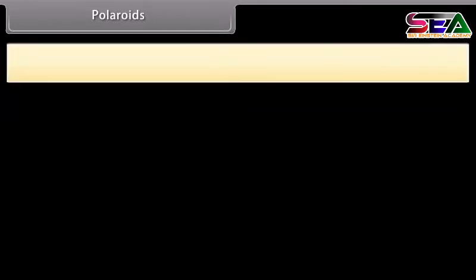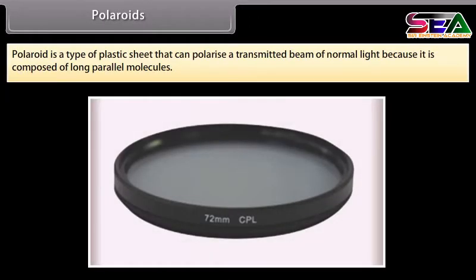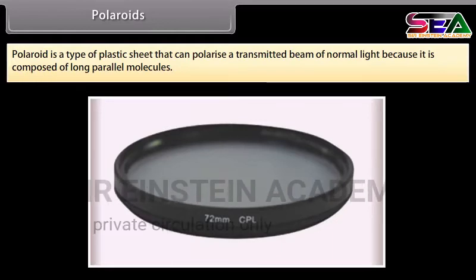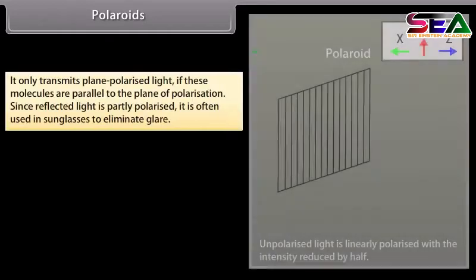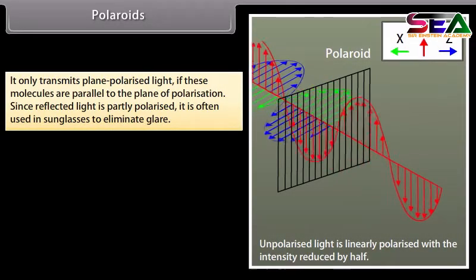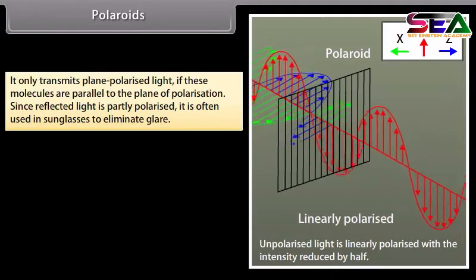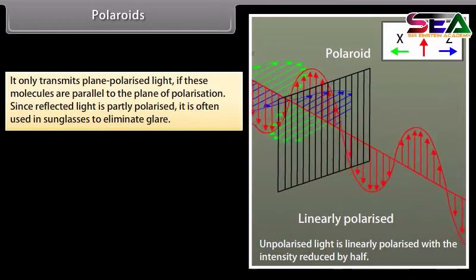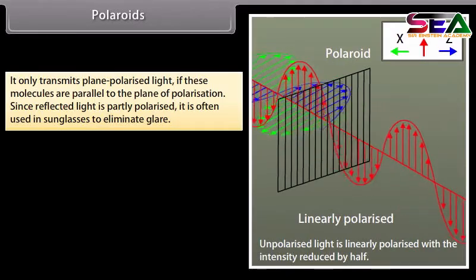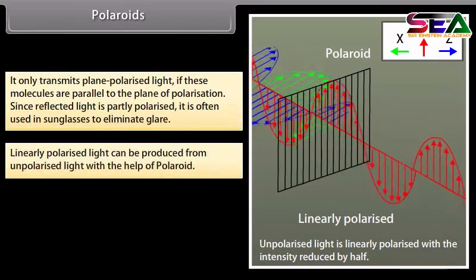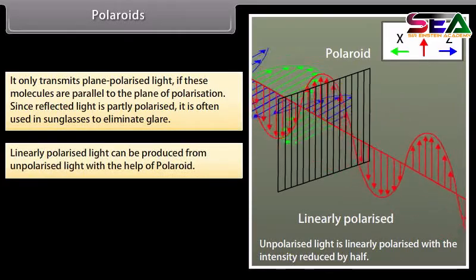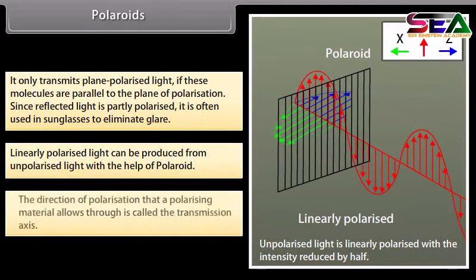Polaroids. Polaroid is a type of plastic sheet that can polarize a transmitted beam of normal light because it is composed of long parallel molecules. It only transmits plane polarized light if these molecules are parallel to the plane of polarization. Since reflected light is partly polarized, it is often used in sunglasses to eliminate glare. Linear polarized light can be produced from unpolarized light with the help of polaroid. The direction of polarization that a polarizing material allows through is called the transmission axis.